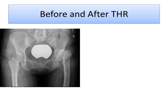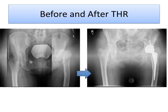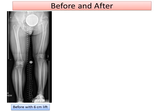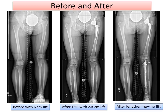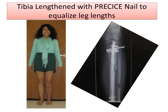Before the hip replacement and after the hip replacement — I want to show you the timeline and how we approach this. Before surgery, she has 6 centimeters of leg length discrepancy. After the total hip replacement, the discrepancy has been decreased to 2.5 centimeters. And after a lengthening of the tibia, she has full equalization of her leg lengths. The strategy was: after total hip replacement, the residual discrepancy was treated by lengthening the tibia with a precise nail to equalize her leg lengths. The patient gave permission to show her images as seen here.